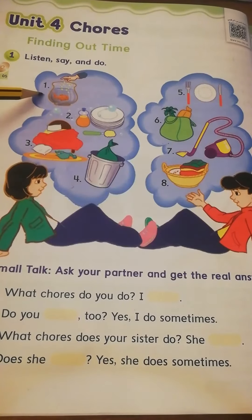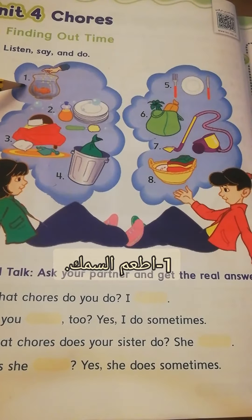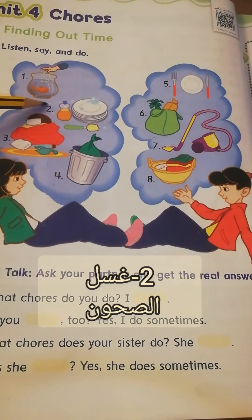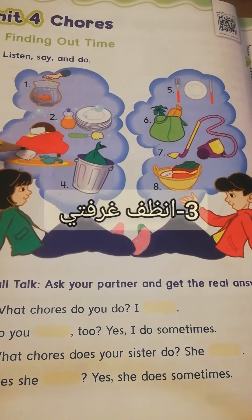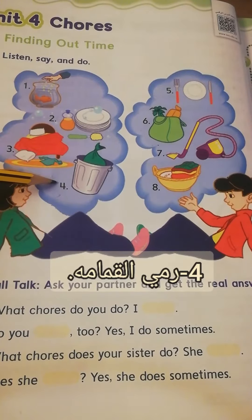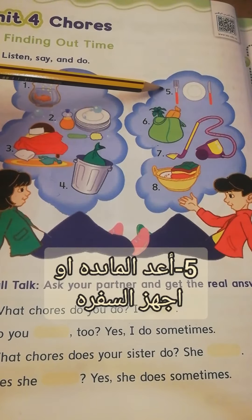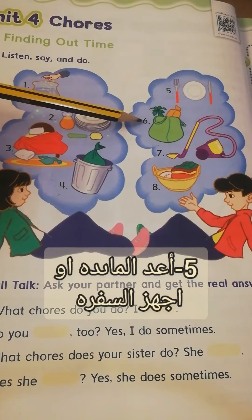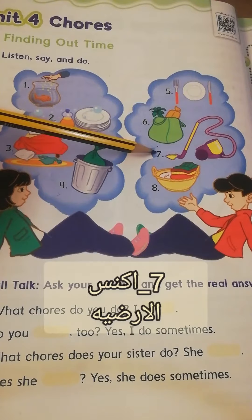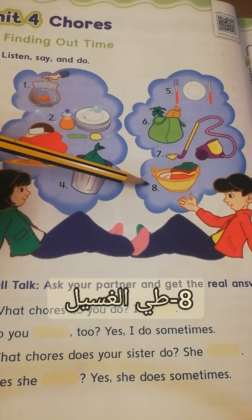Chores. What chores do you do? 1. I feed the fish. 2. I wash the dishes. 3. I clean up my room. 4. I take out the trash. 5. I set the table. 6. I go shopping. 7. I vacuum the floor. 8. I fold the laundry.